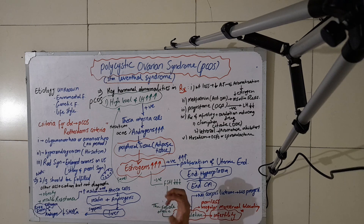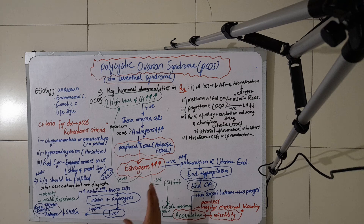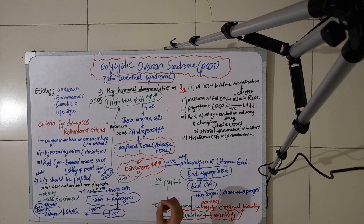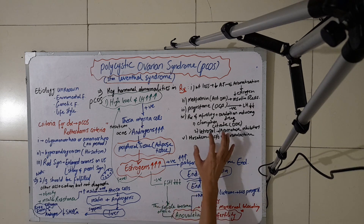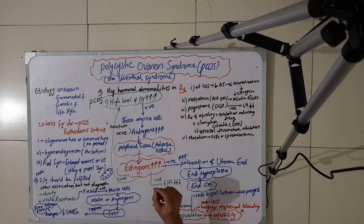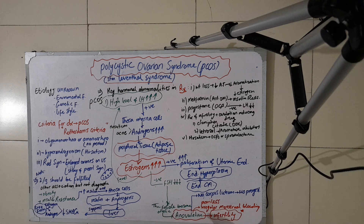In the next lecture, we will discuss the specific hormonal abnormalities in PCOS — which hormone levels are increased and which are decreased — as well as clomiphene citrate and the syndromes associated with polycystic ovarian syndrome. Thank you for watching, and we will continue in the next video.